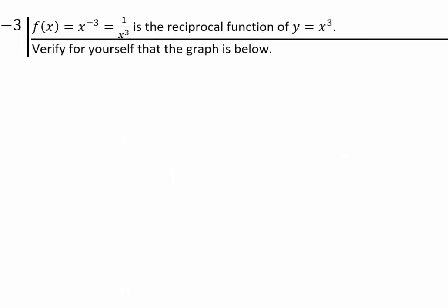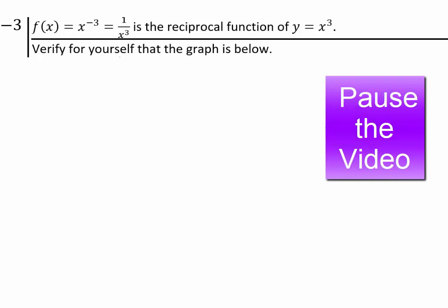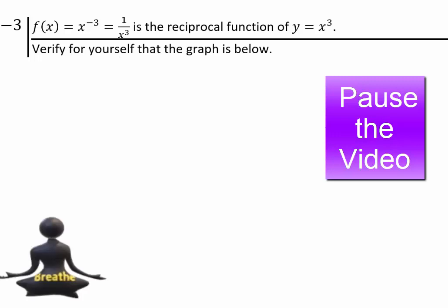This is a good time for you to pause the video and explore what happens to the reciprocal function of x cubed. If you have f of x equals x to the power negative 3, or 1 over x cubed, go ahead and see what will happen to its graph. Graph it, determine if it's one-to-one, find its inverse if it is, find the domain, find the range, and list any asymptotes. This would be a good place to review all the concepts we've learned so far. Go ahead, pause the video.